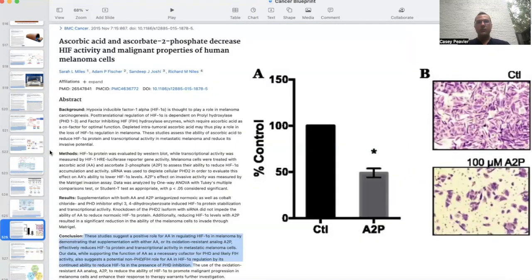In fact, in this paper, ascorbic acid and ascorbate 2 phosphate decrease HIF activity and malignant properties in human melanoma cells. As you can see in this graph, we're seeing that the control, which doesn't have high-dose ascorbic acid, they're at 100%. And when you actually add high-dose vitamin C, you can see the tumor size is cut in half.